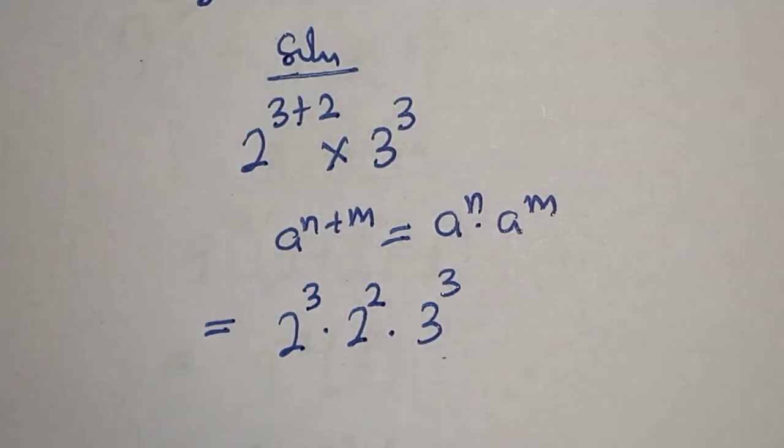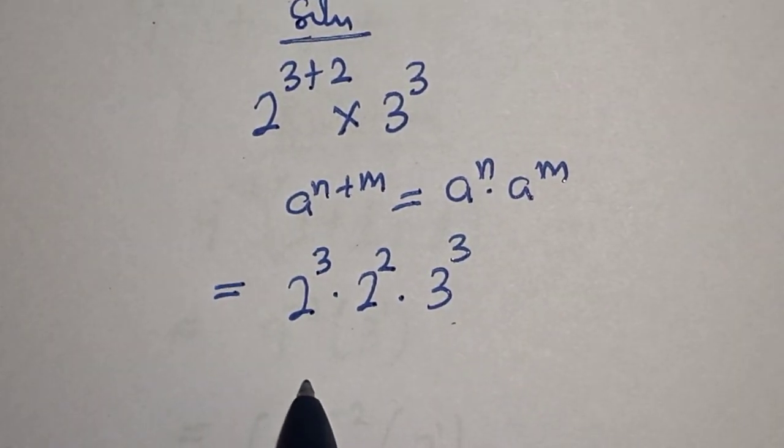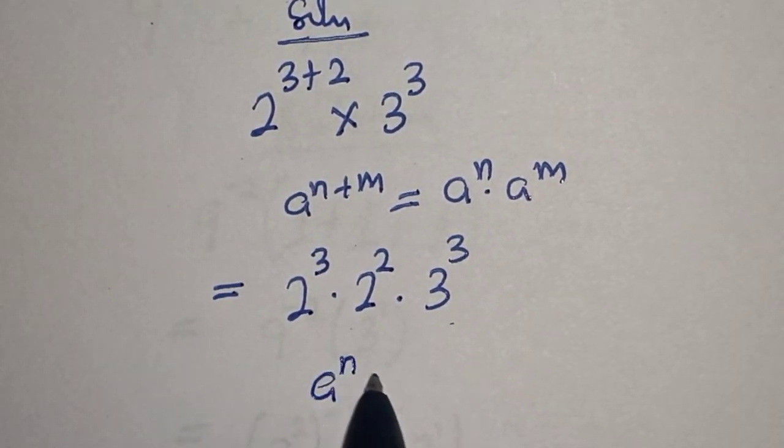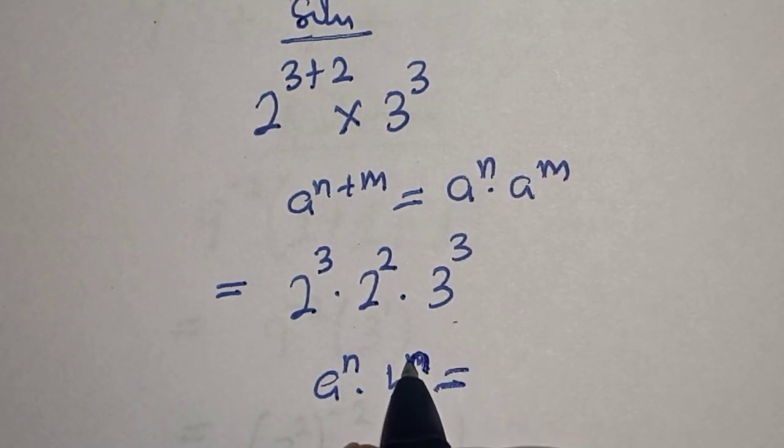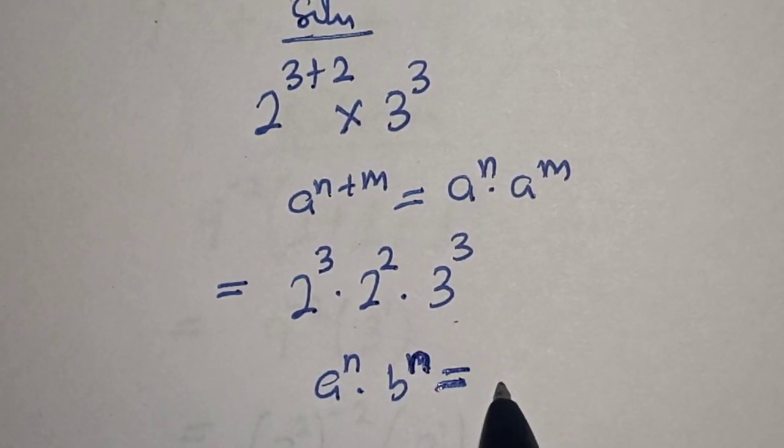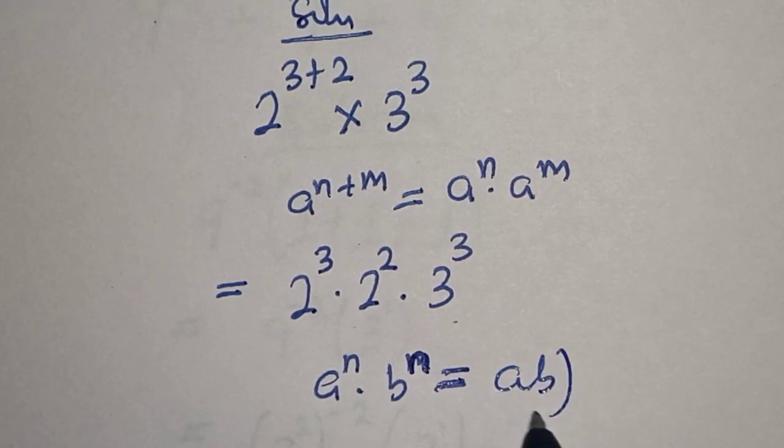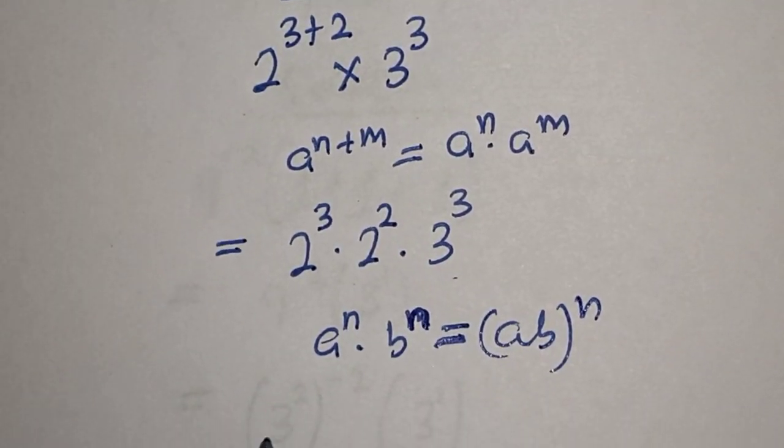Also take note of this rule that a raised to power n multiplied by b raised to power n is equal to ab to the power of n. Then we have 2 multiplied by 3 to the power of 3 multiplied by 2 square.